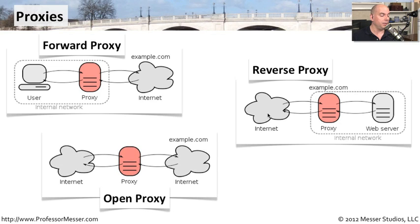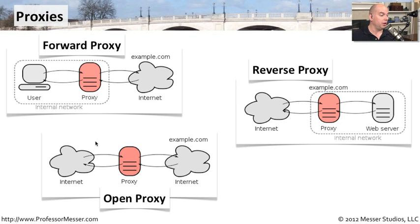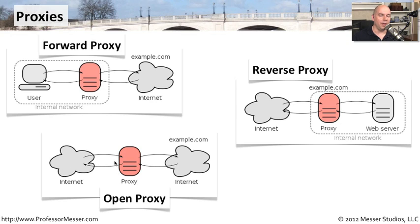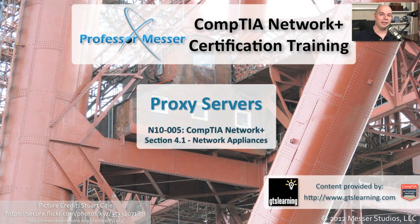A third type of proxy you might see is something called an open proxy. This is one that's simply out there on the internet and available for you to use, where someone on the internet is wanting to communicate to a different server but perhaps doesn't want that request to seem like it came directly from them. So they'll use an open proxy on the internet to communicate to that website, and that website will then talk back to the proxy, who will then talk back to the end user. This is a little bit questionable from a security perspective, because the owner of the open proxy can embed their own data within the response. So you need to be careful about using an open proxy — you have to be able to trust the proxies that you're using. Otherwise, you may be getting data that you were not intending to get, embedded directly from that proxy.